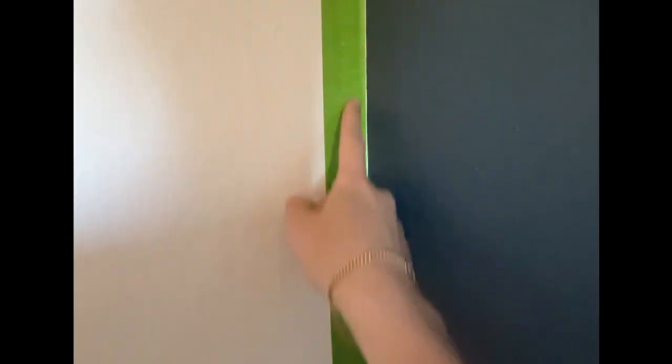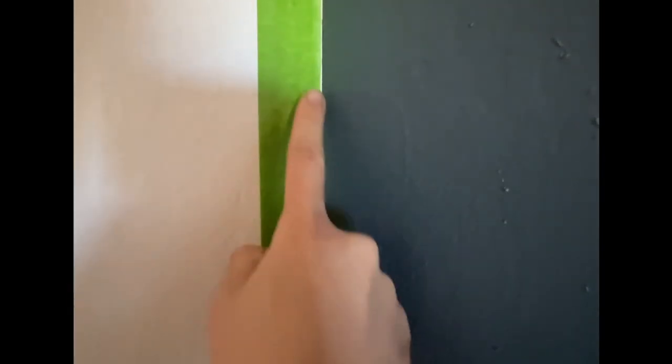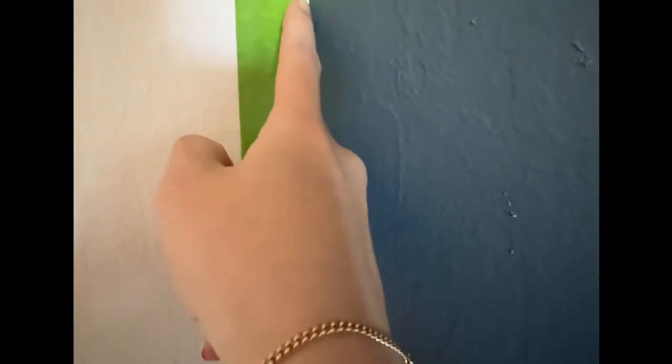To get a really crisp line around your accent wall, what you do is first stick your painter's tape. Make sure when you're sticking it, you don't cover any of the old accent wall color. Leave a little bit of white. Next thing you want to do is add a streak of white paint on the side that touches your accent wall.